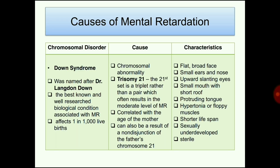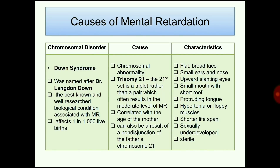Down syndrome is the best-known biological condition associated with mental retardation. It is a chromosomal abnormality where the 21st chromosome set is a triplet rather than a pair, often resulting in a moderate level of mental retardation. It is correlated with the age of the mother and can also result from non-disjunction of the father's chromosome number 21. Characteristics include flat broad face, small ears and nose, upward slanting eyes, small mouth with short roof, protruding tongue, hypotonia or floppy muscles, and the patient is short, sexually underdeveloped, and sterile.